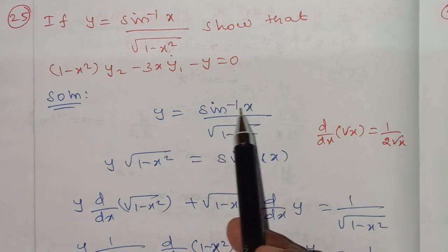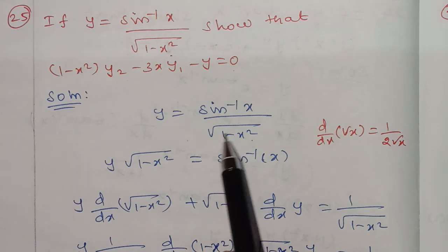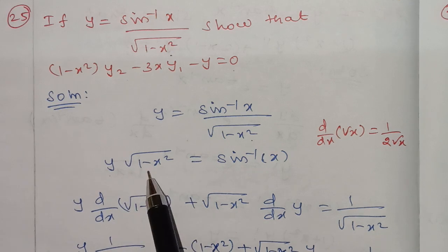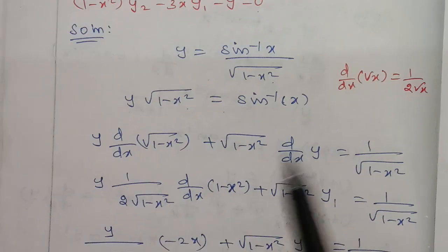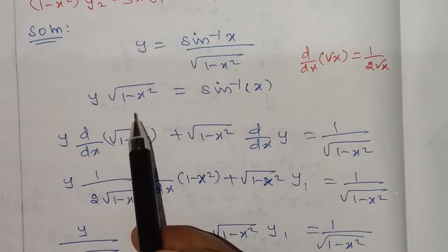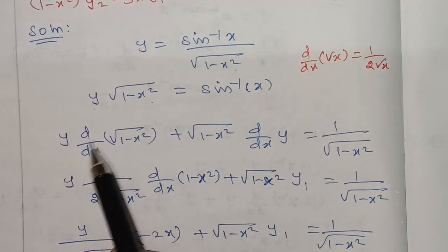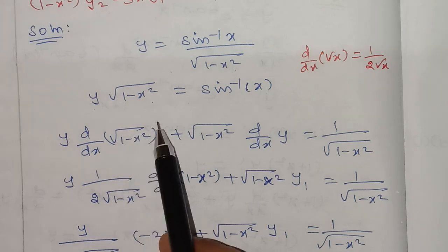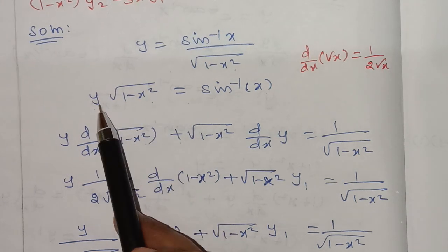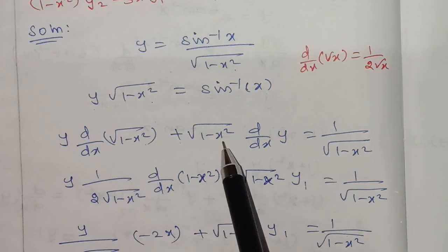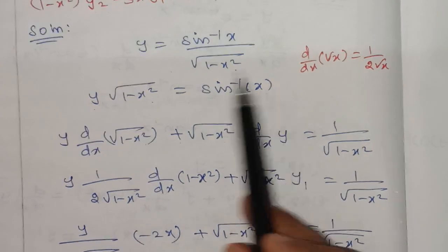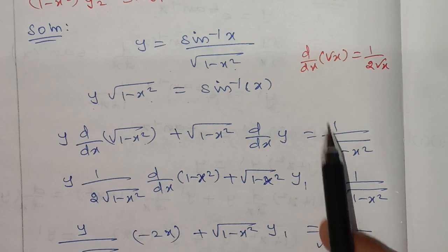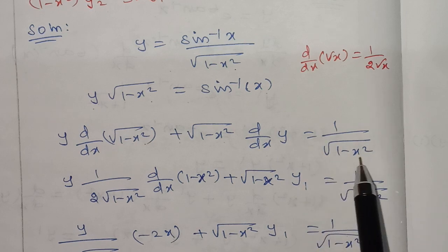We will differentiate y. Since y equals sin inverse of x divided by square root of 1 minus x squared, we will apply the quotient rule (uv method). So differentiating: d/dx of square root of 1 minus x squared into y, then plus square root of 1 minus x squared into d/dx of sin inverse of x.